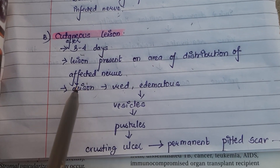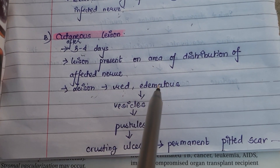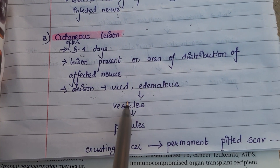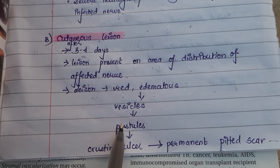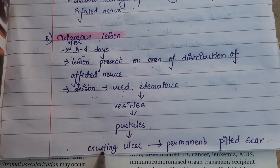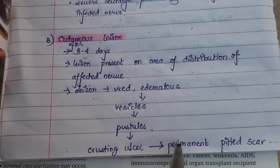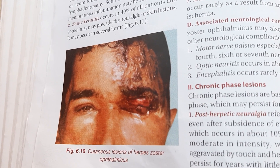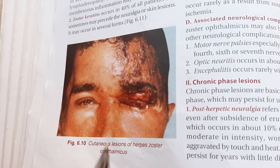The cutaneous lesions begin with redness and edema of the affected area, then vesicles form, followed by pustules. The pustules eventually burst to form crusting ulcers, and after some time the crust is shed, leaving behind a permanent pitted scar.